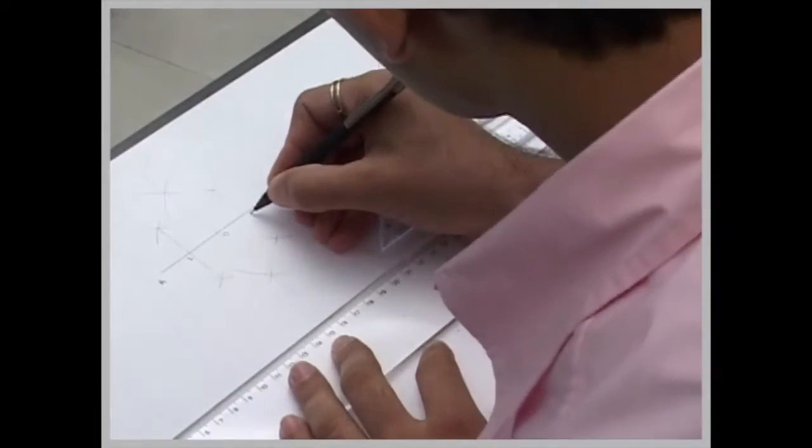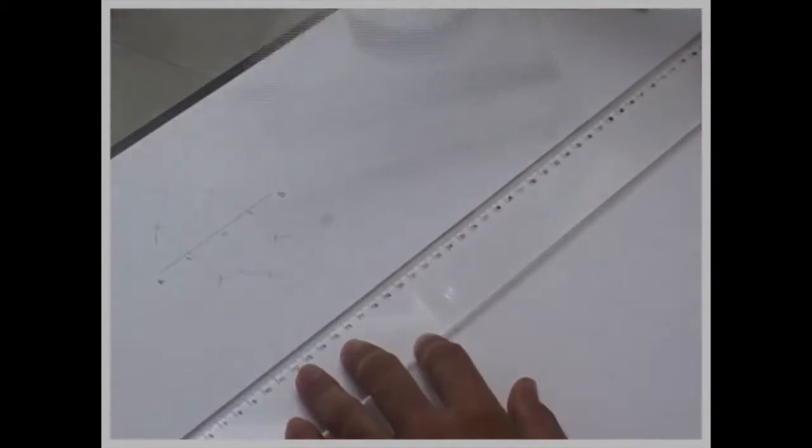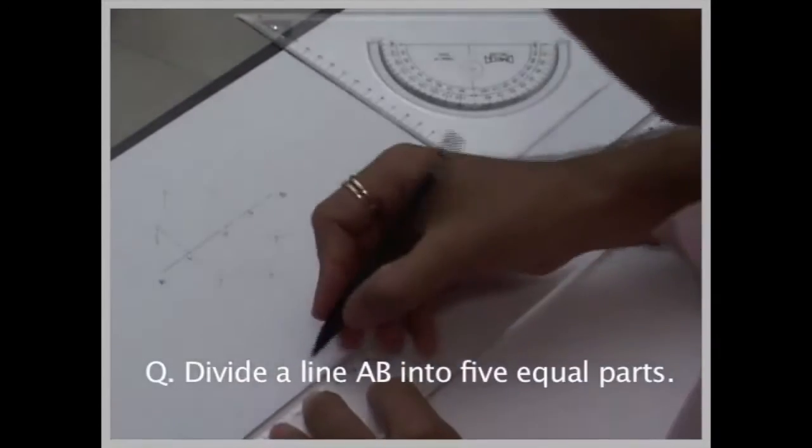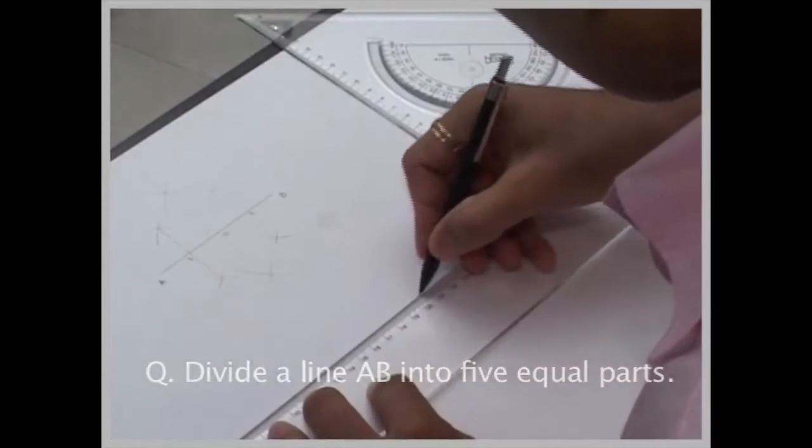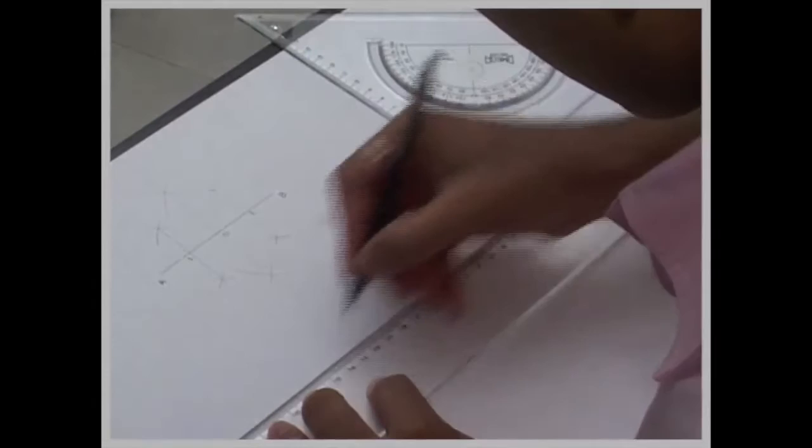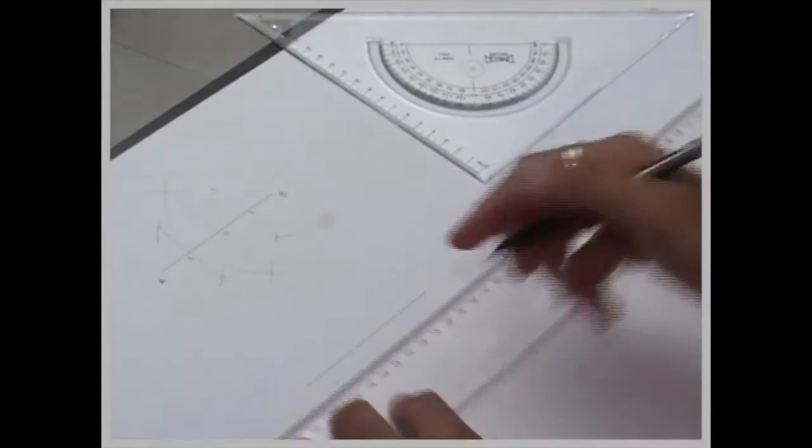Now let's say if I want to divide a line into five equal parts, then how would you do it? To divide a line into five equal parts, first I'll draw a line AB which is 9 cm long.